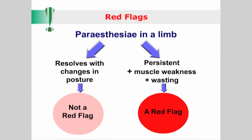Likewise, transient paresthesia in a limb that resolves with changes in posture may simply be due to temporary compression of a vessel or a nerve. However, if persistent or accompanied by muscle weakness and wasting, paresthesia should be regarded as a red flag. As we cover the key questions in case history for each system, we will also identify system-related red flags.